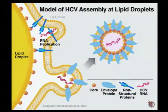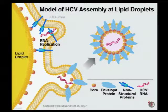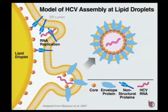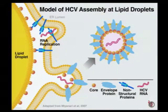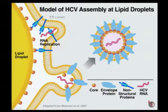My lab is really interested in the process of HCV assembly at lipid droplets. Here it's key to know that one viral protein, the nucleocapsid core, directly localizes to the surface of these lipid droplets, and this localization is key for the assembly process because it serves to recruit the RNA replication complexes to the vicinity of these core-coated lipid droplets, orchestrating the assembly of individual particles.